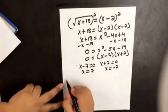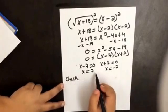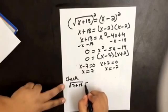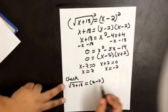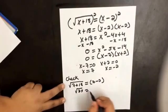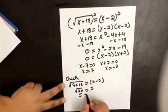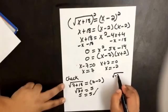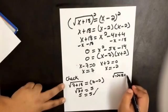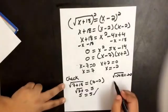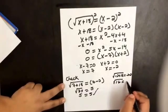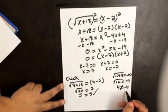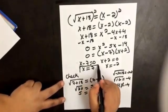Now we want to check. When x equals 7: the square root of 7 plus 18 equals 7 minus 2, which is the square root of 25 equals 5. The square root of 25 is 5, so it works. When x equals negative 2: the square root of negative 2 plus 18 equals negative 2 minus 2, giving us the square root of 16 equals negative 4. The square root of 16 is positive 4, so 4 does not equal negative 4 — that's not an answer. So our only answer is x equals 7.